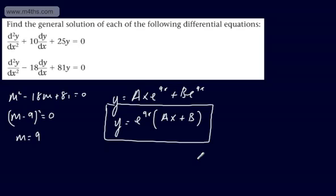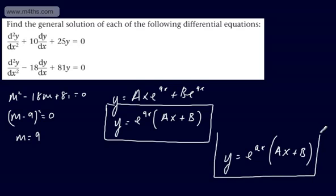The take-home message: if we have repeated roots to the auxiliary equation, the general solution of the second-order differential equation is y = e^(αx)(ax + b), where a and b are arbitrary constants and α is the repeated root.